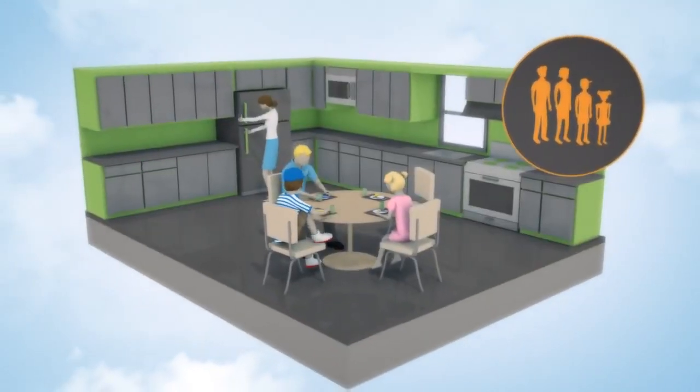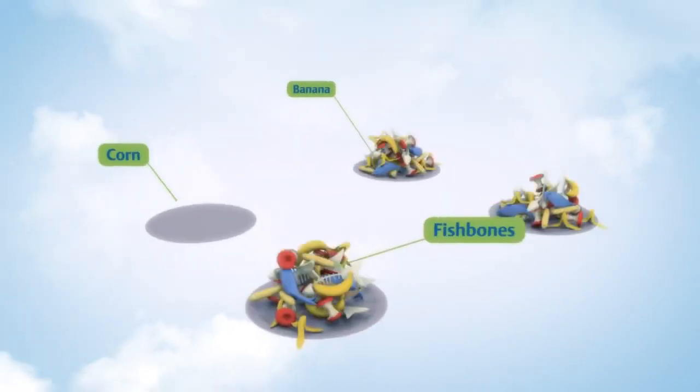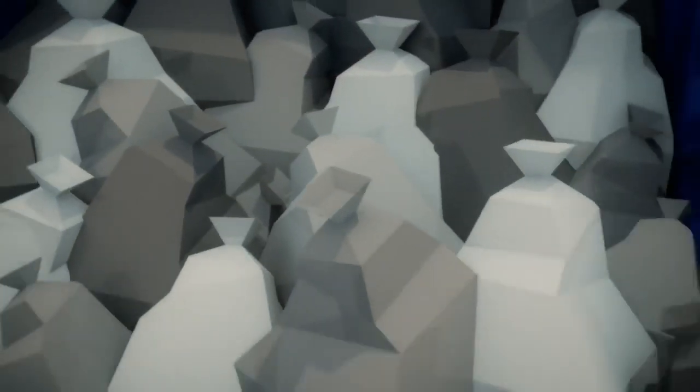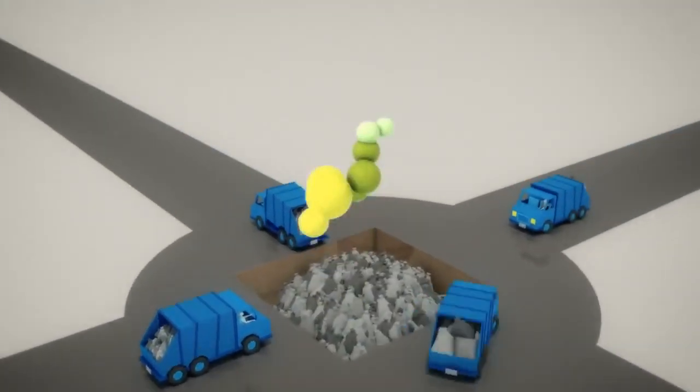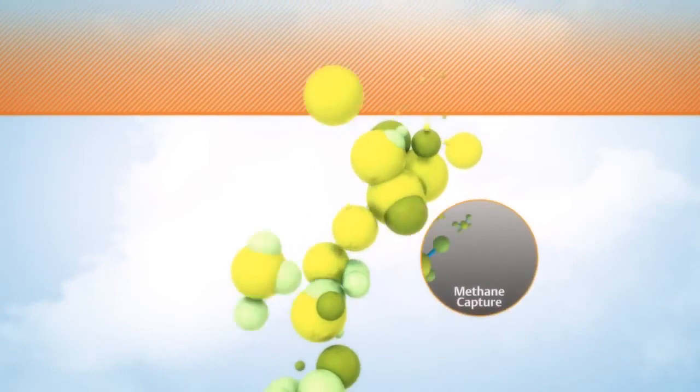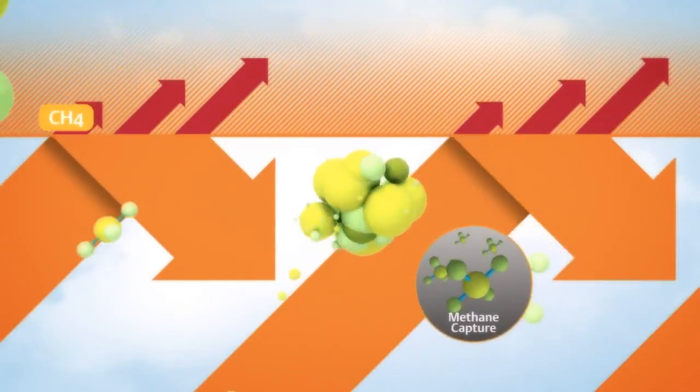In the U.S., an average family of four produces about 800 pounds of food scraps a year. Most get hauled to landfills by trucks burning fossil fuels. And once there, they decompose, producing methane, a potent greenhouse gas that traps heat in our atmosphere.